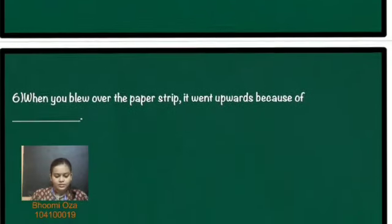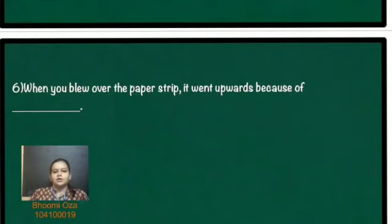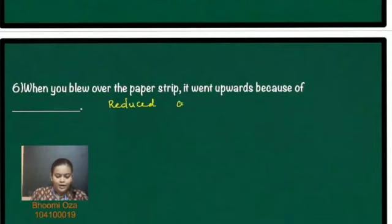The sixth question: when you blew over the paper strip, it went upward because of what? The answer is: because of reduced air pressure above the paper strip.